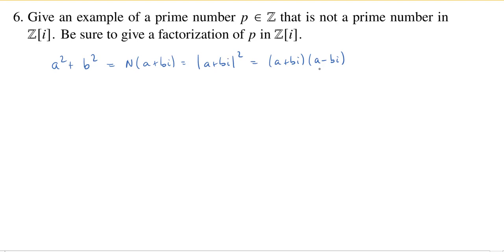So how does that relate to our problem? Well, we're looking for additional factorizations of prime numbers that may not exist over the integers, but might exist over the Gaussian integers. So all we need to do is find a prime number that is a sum of squares.